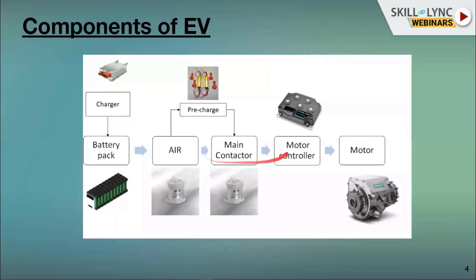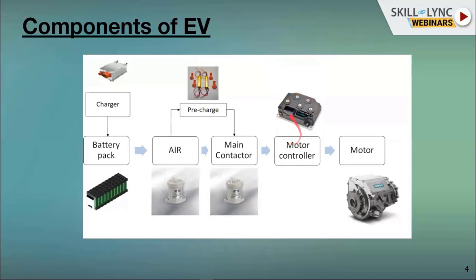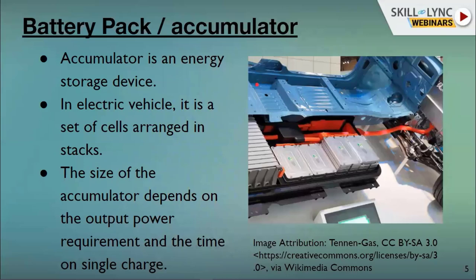We'll start with the flow of energy in an electric vehicle. The first is the storage of energy — the battery pack. The battery pack cannot store energy on its own; we pump energy into it using chargers. From the battery pack, components ensure the power goes properly to the motor controller. Then we have the motor controller and motor, along with control circuits like the accelerator. Today we'll focus on the power train path — the power path inside the electric vehicle.